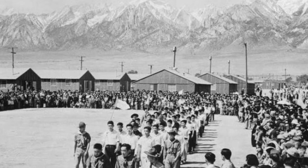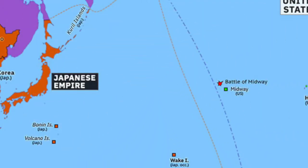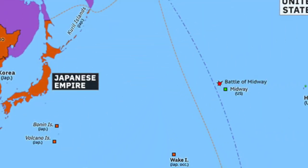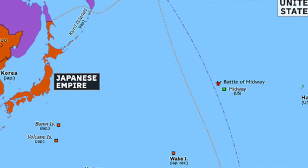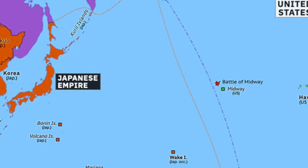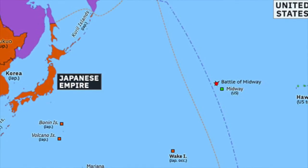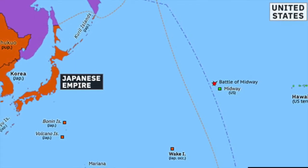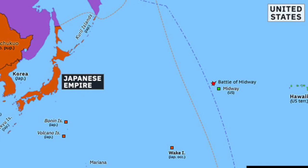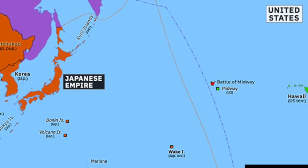America did regain the military initiative in the naval war in the Pacific — which had been sparked by Pearl Harbor — in the Battles of Coral Sea in May 1942 and the Battle of Midway in June 1942. They then began the long series of island-hopping campaigns to reconquer Japanese-held territory in the South and Central Pacific.